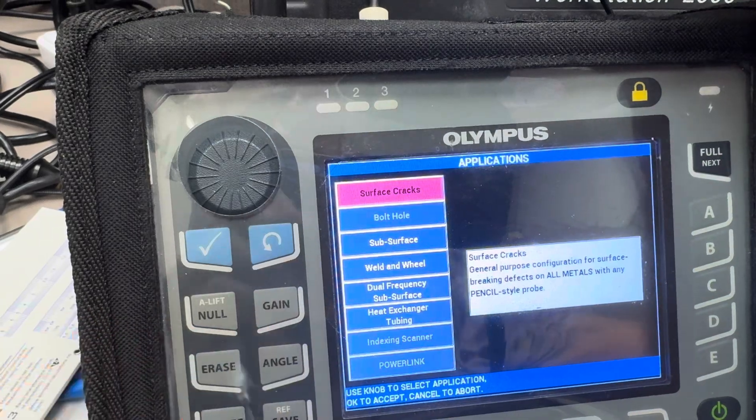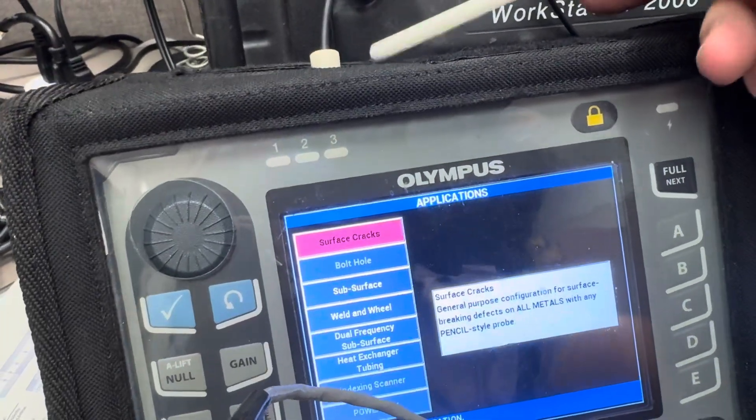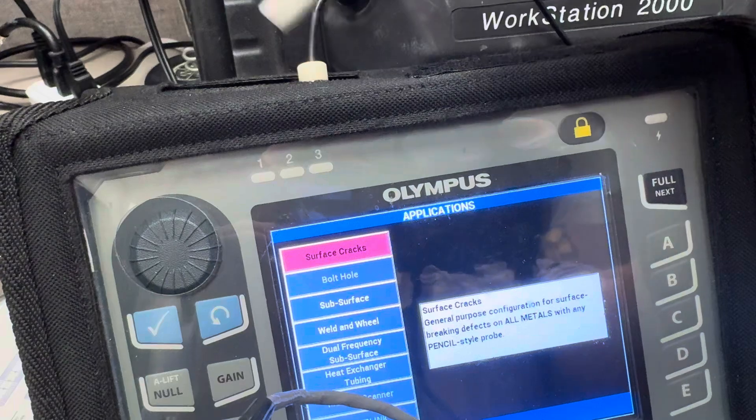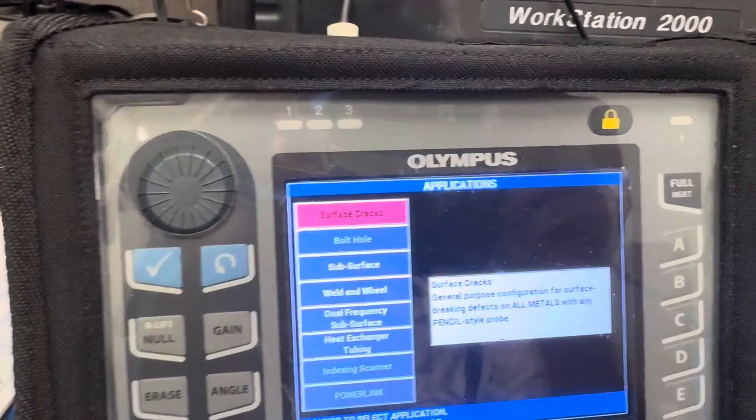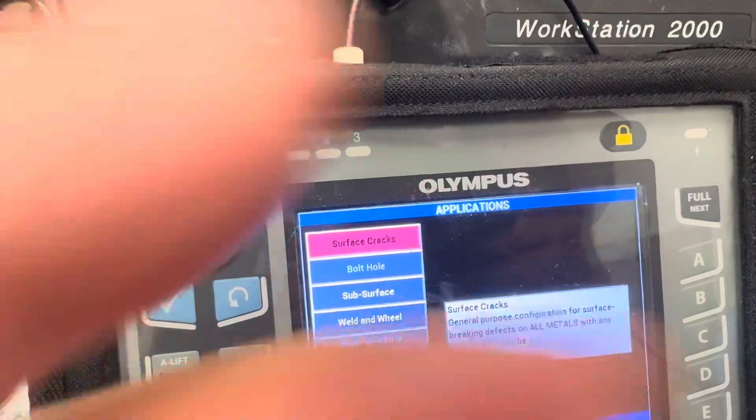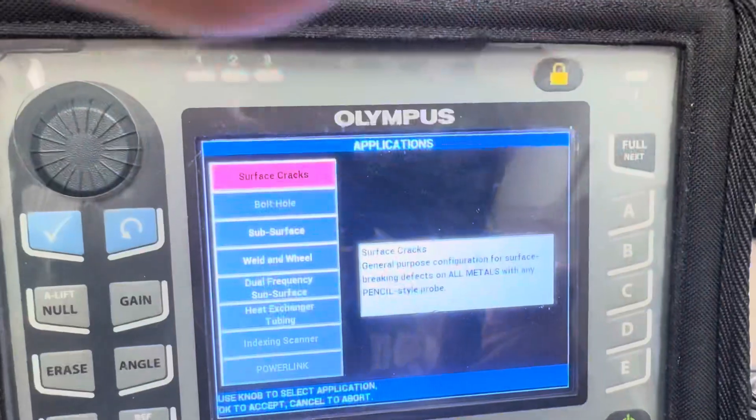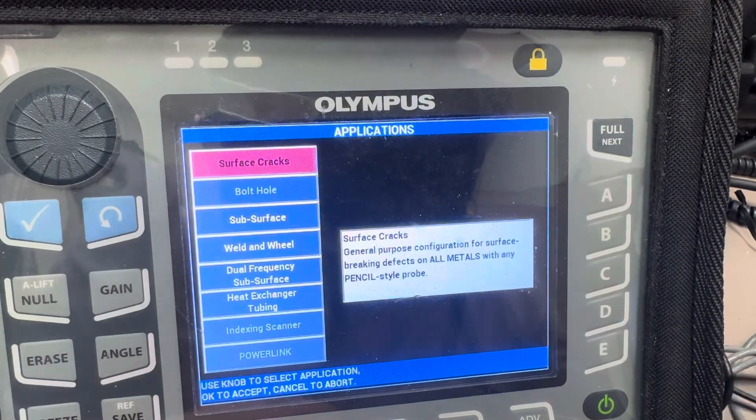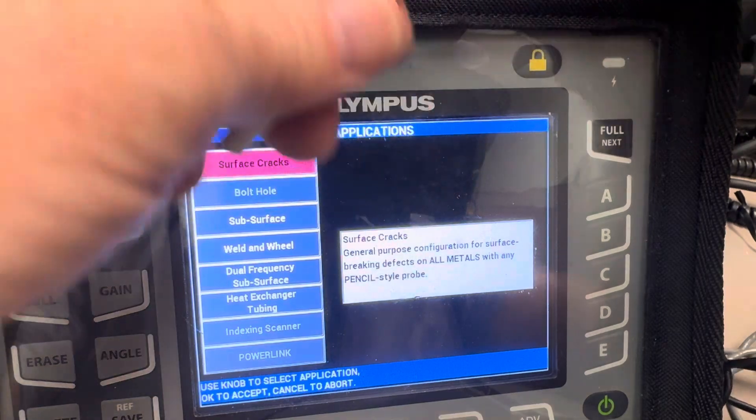This one's hooked up to the BNC connector, BNC connector right there. And this other one has a Limo connector that will go on to the 15 pin Limo. So first thing I'll do is just test this one.